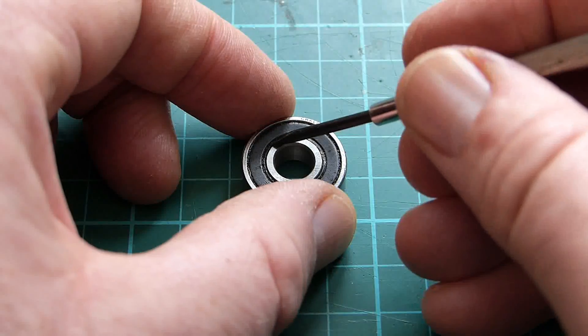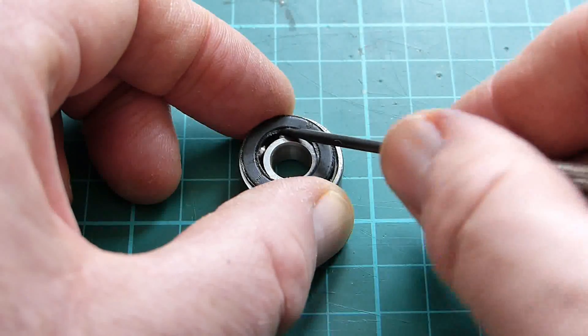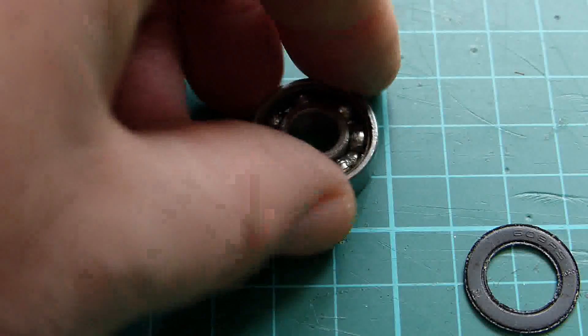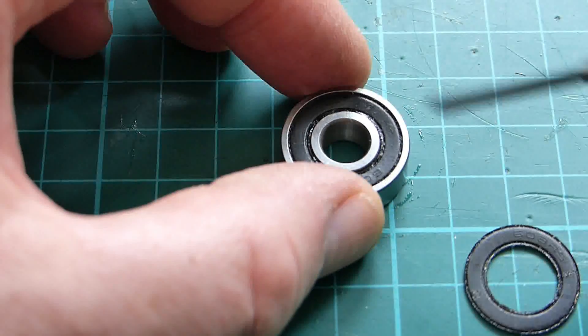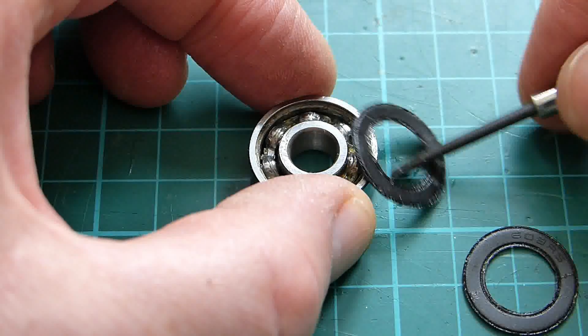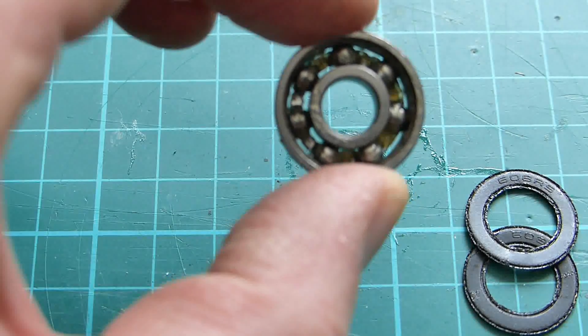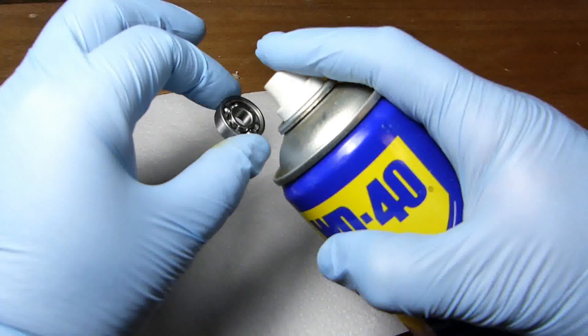To enable the spinner to spin faster I cleaned the grease out of the bearing. To do that I remove the rubber seals by levering them out with a screwdriver. And then I sprayed WD-40 into the bearing until all the grease was removed.